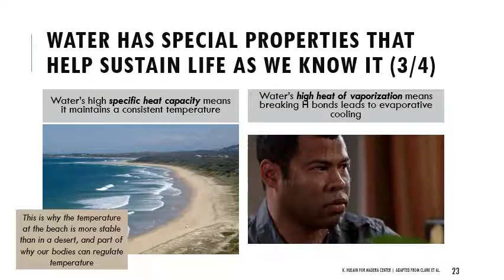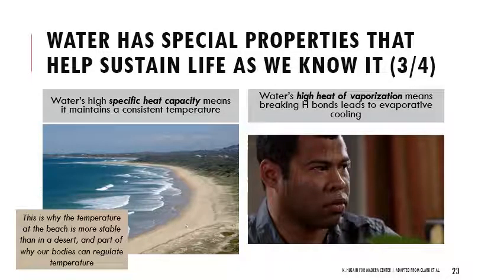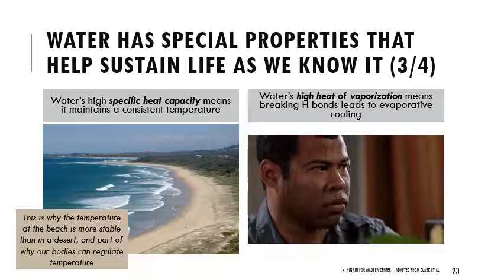Water also has a high specific heat capacity — it maintains a consistent temperature. If you think about a location like the beach, even though it's cool, it remains that level of coolness without having super high daytime temperatures and super low nighttime temperatures like Fresno would. Fresno is a desert — there's a lot less water to maintain temperature, so it fluctuates a lot. Water also has a high heat of vaporization. When water evaporates and those hydrogen bonds are broken, it leads to cooling. The reason we're able to maintain homeostasis and regulate our body temperature through sweating is because of water's high heat of vaporization.